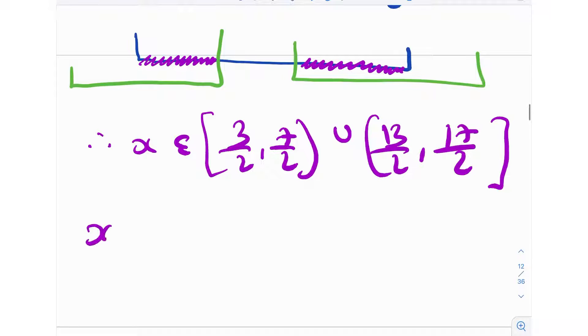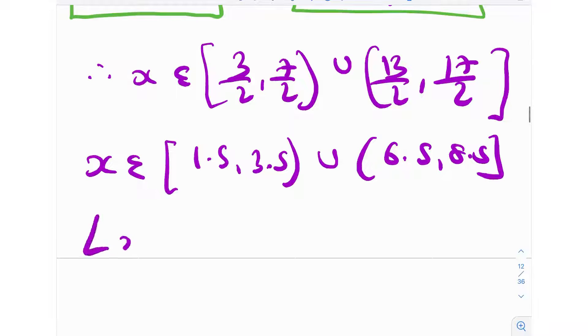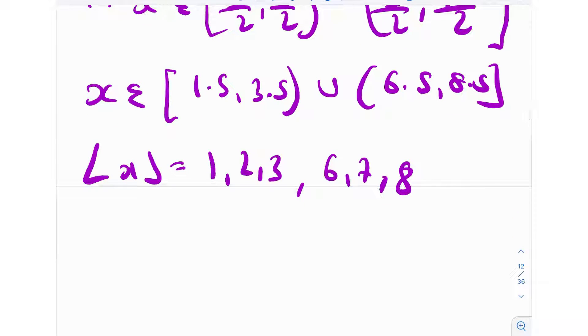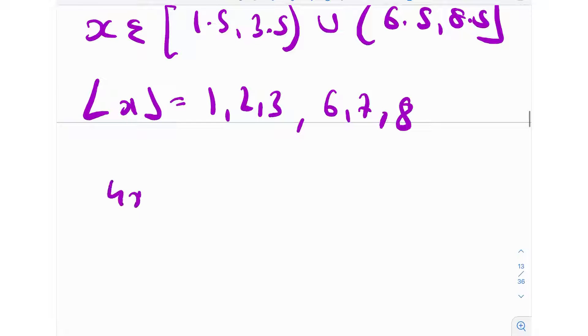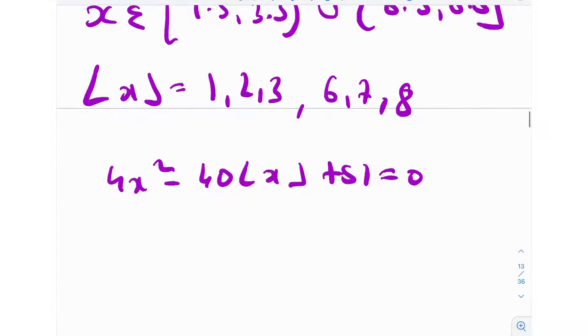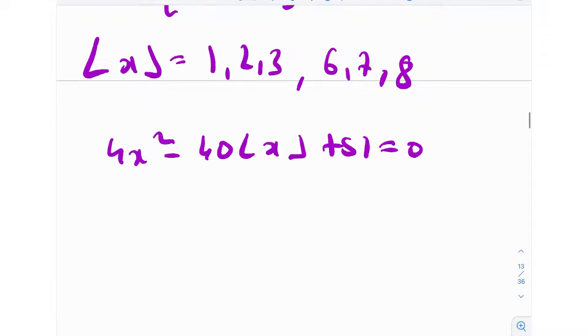What do we notice? We notice that x can be anywhere from 1.5 to 3.5 union 6.5 to 8.5. Therefore, the greatest integer function of x can either be 1, 2, or 3 from this first interval, and of the second interval, it will also be 6, 7, and 8. Really, we split up this question into a certain number of finite cases. We had 4x² - 40⌊x⌋ + 51 = 0, and now we just have to analyze these 6 cases one by one and then figure it out using the quadratic formula.